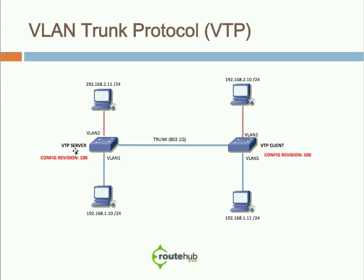Doing so, let's say, brings the configuration revision number to 100 on the server. It propagates that out and the client — which will likely have a lower number, say 99 — sees that 100 is higher and accepts the changes for VLAN 2. At the end of the day, all switches should have the same configuration revision number.